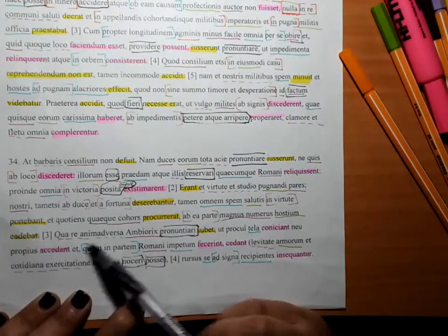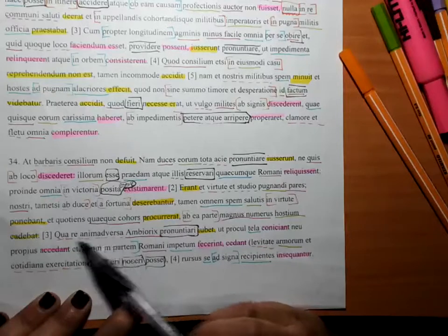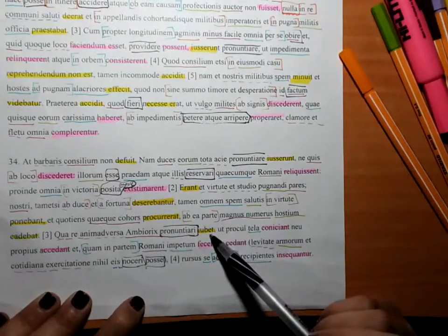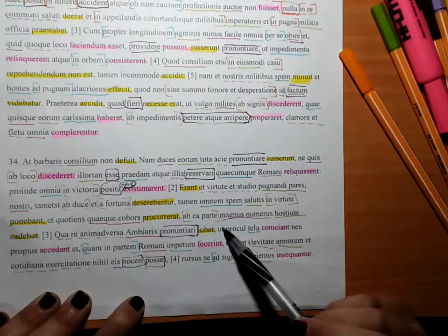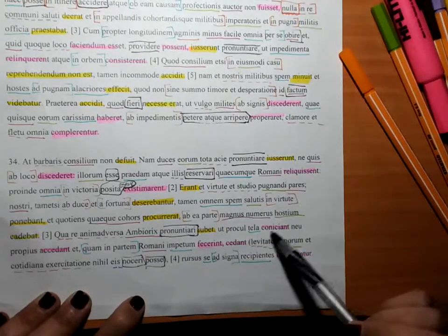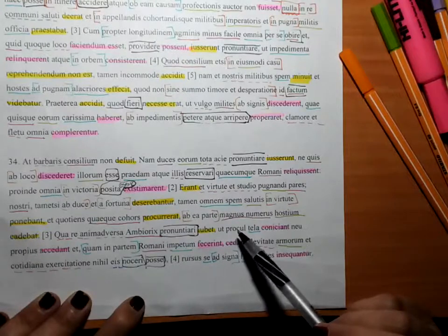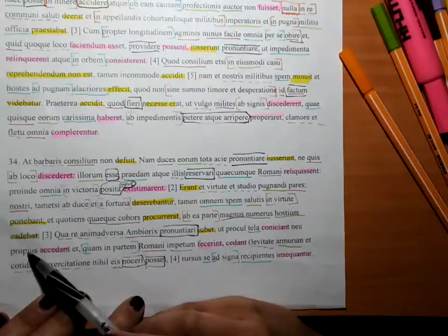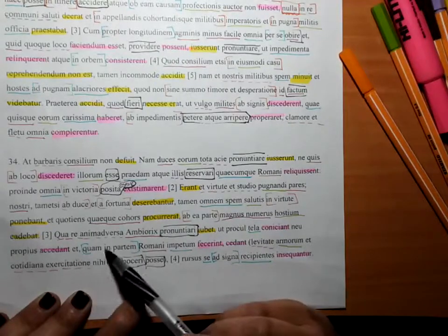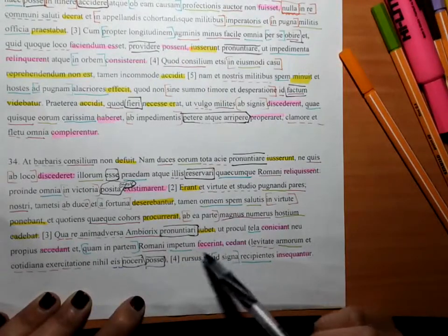In this adverse matter, Ambiorix commanded this to be commanded: that they throw the spears nearby, nor should they approach rather closely, and into whatever part the Romans made an attack,